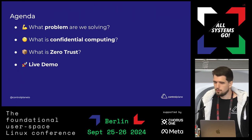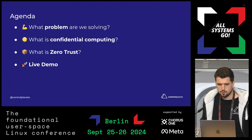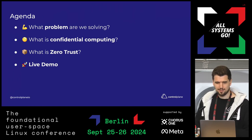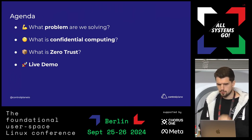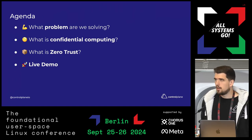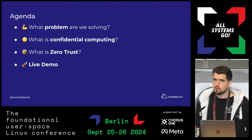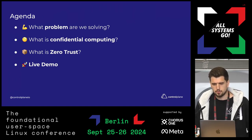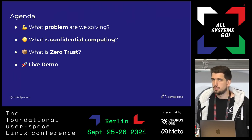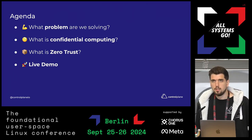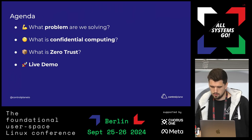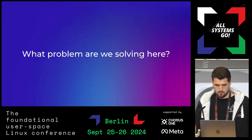Quick agenda overview: first I want to start with a bit of motivation. I like to play with shiny tech as much as the next guy, but it's good to understand what we're actually trying to achieve and when to apply certain concepts. Then we'll dive into confidential computing and what it has to offer, look at implementation steps to achieve zero trust, and then do a live demo of an extension I wrote for the SPIRE project that utilizes confidential computing primitives.